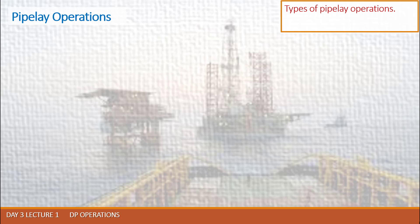The pipe is supported aft of the firing line by the stinger, which is an open lattice gantry extending beyond the stern of the vessel and sloping downwards. The stinger contains a number of sets of support rollers adjusted and positioned to support the pipe in the area known as the overbend. The tension on the pipe helps to reduce the likelihood of pipe buckle at this point.